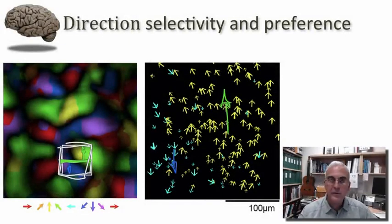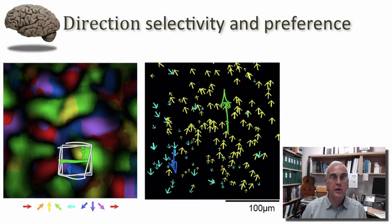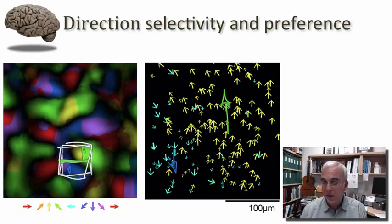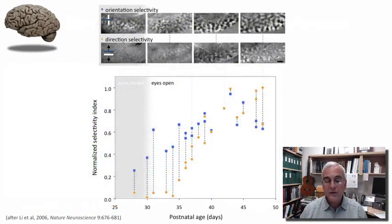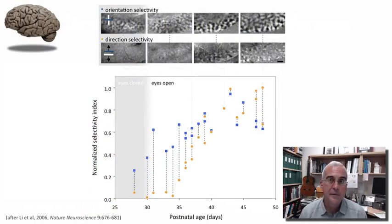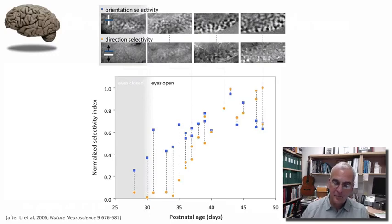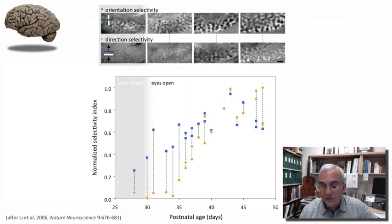My colleagues and I were quite interested to understand how these two properties of orientation preference and direction preference develop conjointly in the very same animals. We thought the way to begin to study this question was simply to follow the development of a cohort of animals raised under our normal laboratory conditions. When we did that, what we discovered is displayed here in this slide.